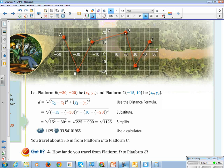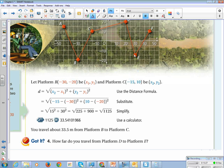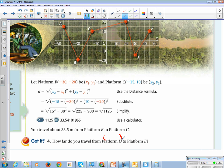Alright, so let's do the same thing, but we're going to do from D to E. So let's find our coordinates for D. I'm just going to write them right above here. Alright, so D is 20, 20, and E is 30, negative 15. So this is going to be x1, y1, x2, y2. So let's plug them in.